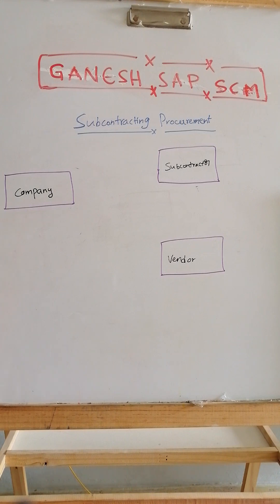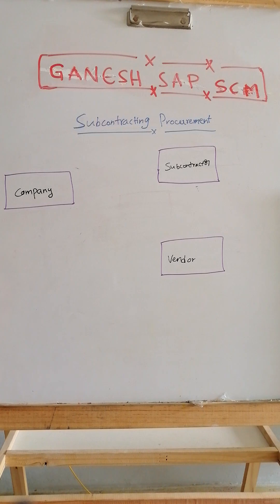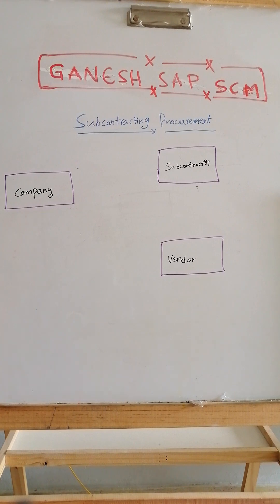The company needs to procure a final product and sends components to the subcontractor. There are different reasons a company might choose subcontracting over standard procurement. For example, in my experience, electrical metal panels are sent to a subcontractor for bending, or materials are cut into small pieces of specific dimensions — 2mm, 10mm — whatever length and width the business requires.